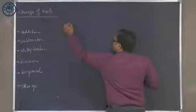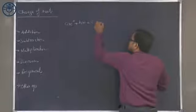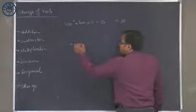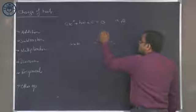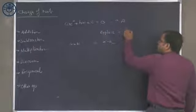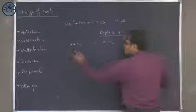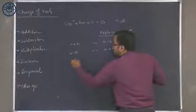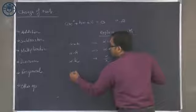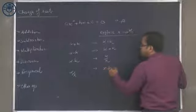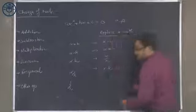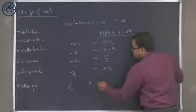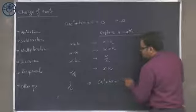If I am given an equation ax squared plus bx plus c equal to 0 with roots alpha and beta: if I am looking for alpha plus k, replace x with x minus k. If I am looking for alpha minus k, replace x with x plus k. If I am looking for alpha multiplied by k, replace x with x divided by k. If I am looking for 1 upon alpha, the resulting equation will be cx squared plus bx plus a equal to 0.